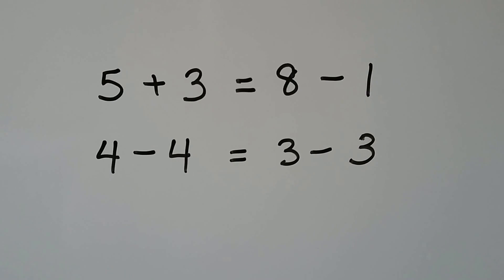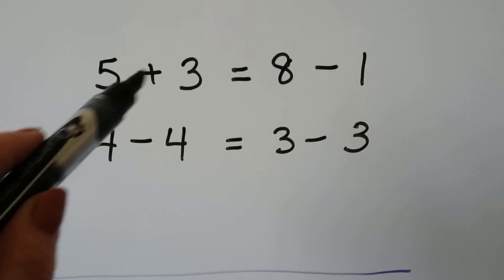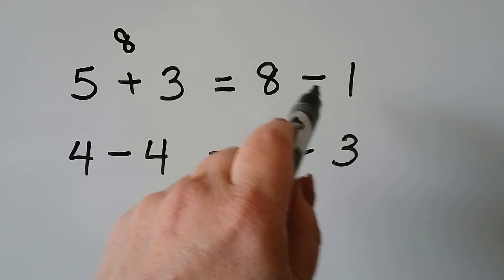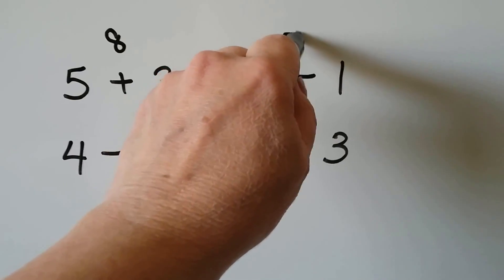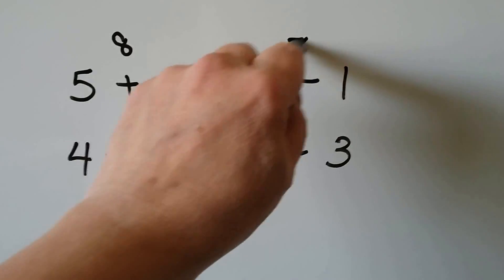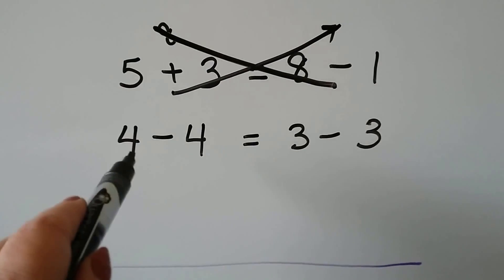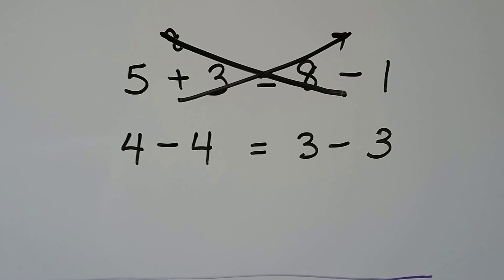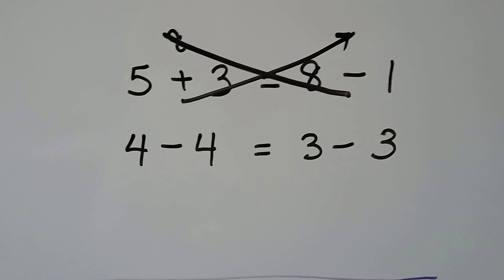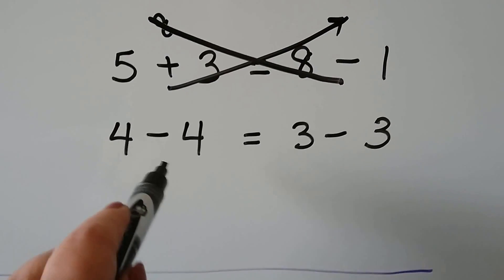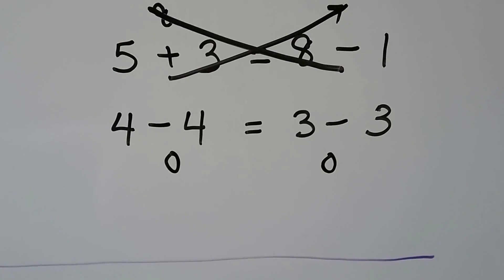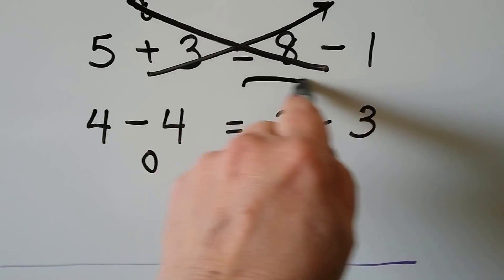5 plus 3 is equal to 8 minus 1. Is that true? 5 plus 3 is 5, 6, 7, 8 — this side is an 8. Is that equal to 8 minus 1? 8 minus 1 is a 7. Well, 8 is not equal to 7, so this one is false. 4 minus 4 is equal to 3 minus 3 — we have two subtraction sentences with different numbers. Could they be equal? If we have 4 and take away 4, we're going to have 0. And if we have 3 and take away 3, we're going to have 0. So 0 is equal to 0 — this one's true.